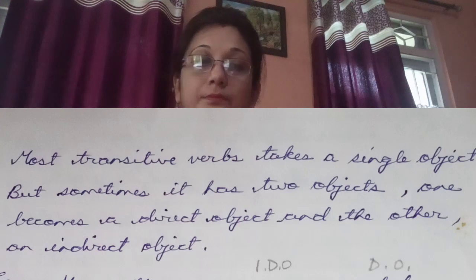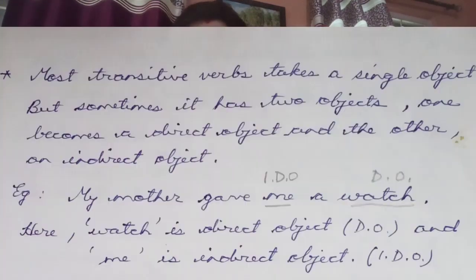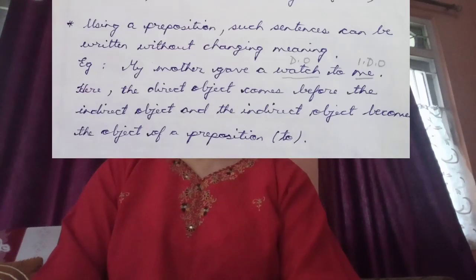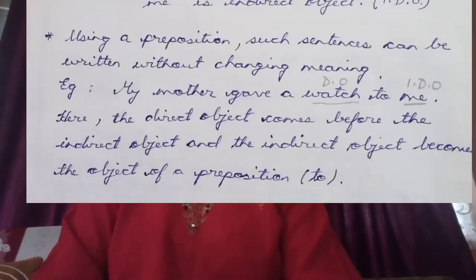So transitive verbs which take a single object can sometimes take two objects — one becomes a direct object and another becomes an indirect object. Another example: 'my mother gave me a watch' — 'me' is the indirect object and 'a watch' is the direct object. We can also change the position by using a preposition with no change in meaning. So you can say 'my mother gave a watch to me'.